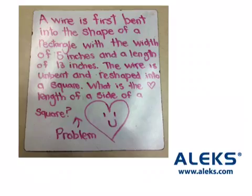Here is your first problem from Alex. A wire is first bent into the shape of a rectangle with a width of 5 inches and a length of 13 inches. The wire is unbent and reshaped into a square. What is the length of a side of a square?